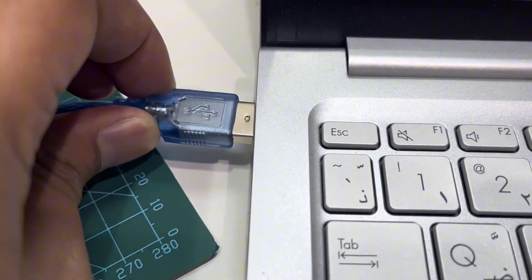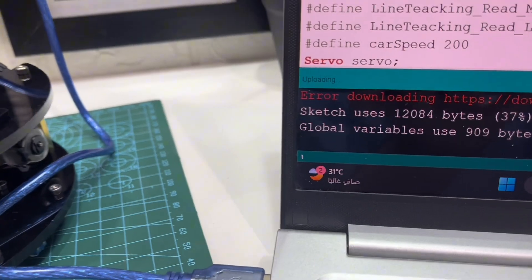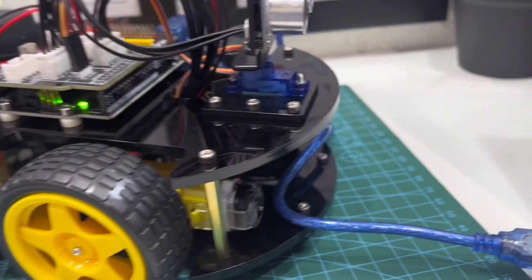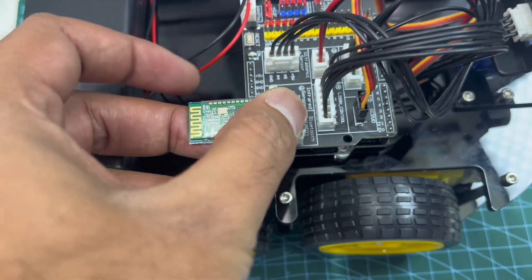Let's connect the Uno with computer and upload the code. Make sure you include all the libraries necessary for this robot. Connect the Bluetooth module after uploading the code.